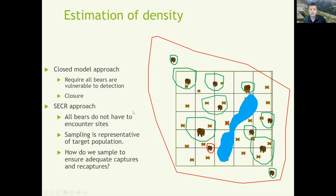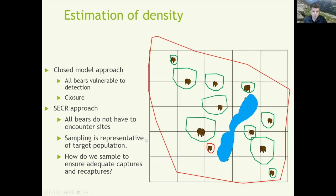With spatially explicit capture-recapture we model the trap layout, so we're not as concerned about all bears encountering sites. However, we still must assume that sampling is representative of the target population. If we get a good density estimate of the grid using SECR, it might not be a good estimate of the overall sampling extent. With SECR, we usually try to expand our area out to the whole area, but the challenge is still getting adequate numbers of captures and recaptures given sampling limits — this is really the challenge of SECR sampling design.